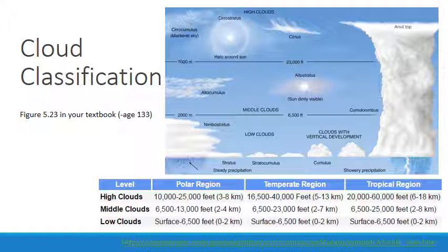Over the next set of slides, I'm going to show you examples of the 10 internationally recognized cloud types, describe how they form, tell you about their composition, the kinds of weather they're normally associated with, and show you a few tricks for telling them apart. We'll start with the high clouds and work our way down to the bottom layer.